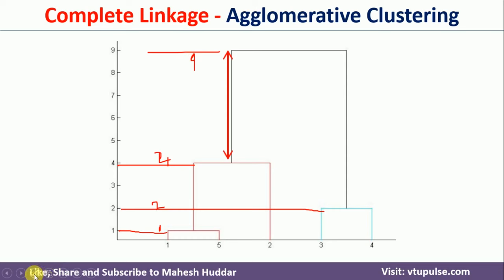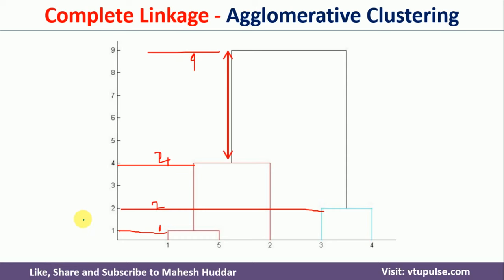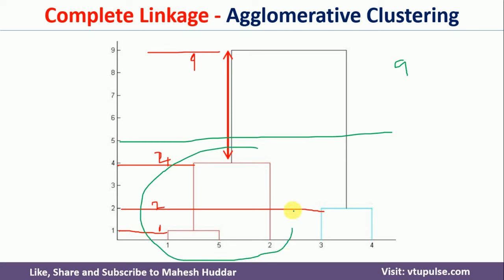Based on the threshold set, we get different numbers of clusters. If the threshold is 9, all points form one cluster: {1,5,2,3,4}. If the threshold is set between 4 and 9 — for example, 5 — we get two clusters: {1,5,2} and {3,4}. So with a threshold of 5, we obtain two clusters.